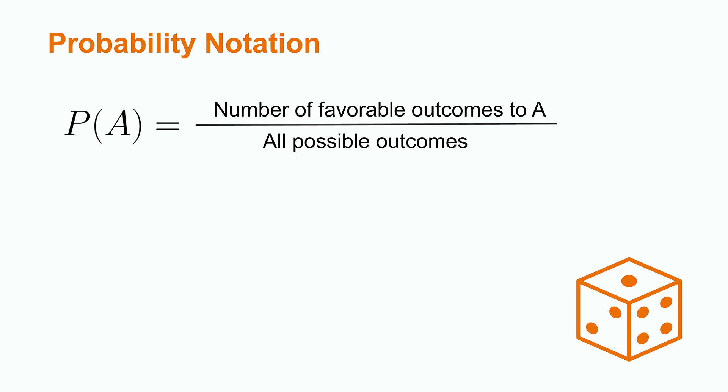Because 1 over 6 is 0.167, and we have a 1 in 6 chance of rolling a 3.